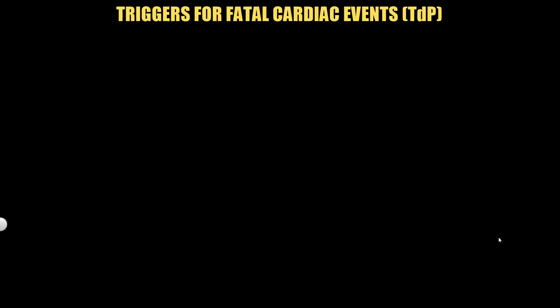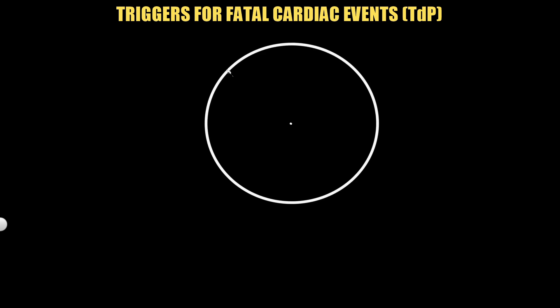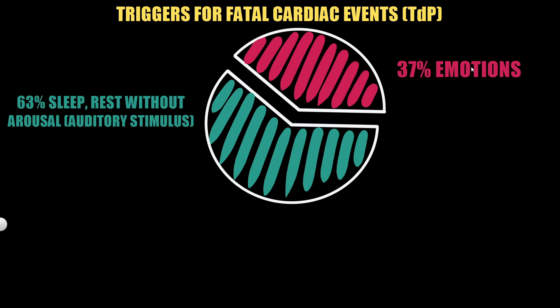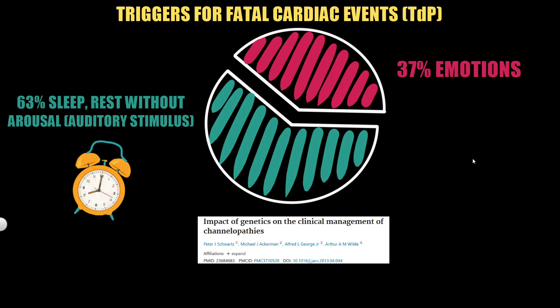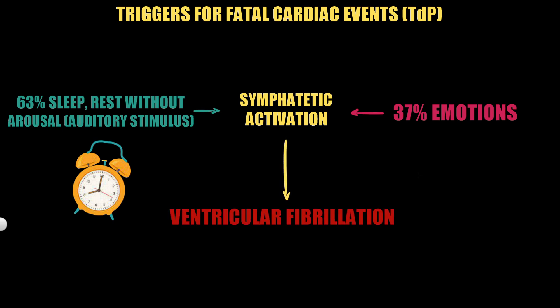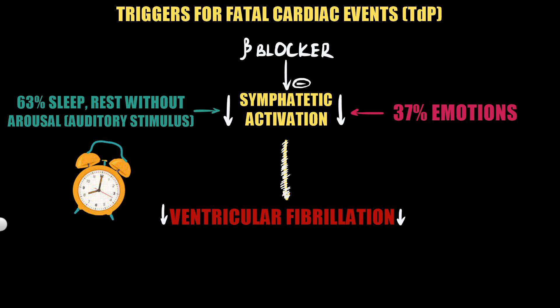Regarding types of torsades de pointes triggers in long QT syndrome type 2: approximately 37% of fatal events are related to emotion but usually not to exercise. Another 63% is associated with sleep or rest without arousal. A relatively specific trigger is sudden loud noise, such as that produced by an alarm clock. Both sudden noise and emotions possibly induce increased sympathetic activity — whether neural or neurohumoral — and predispose the heart to ventricular fibrillation, though the exact role is uncertain. Beta-blocking drugs help reduce arrhythmias and sudden cardiac death in LQT syndrome type 2, but less so than in type 1.